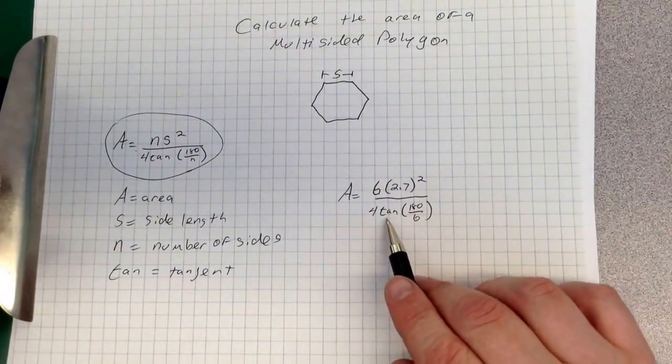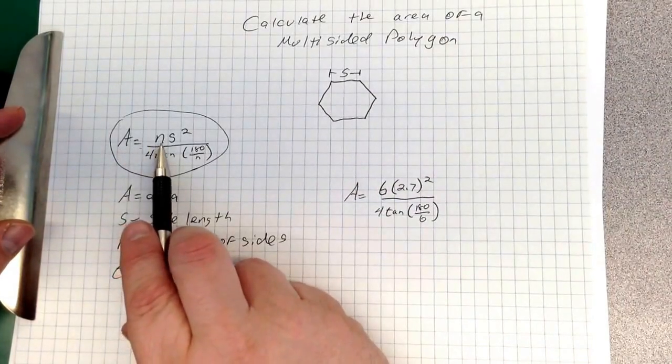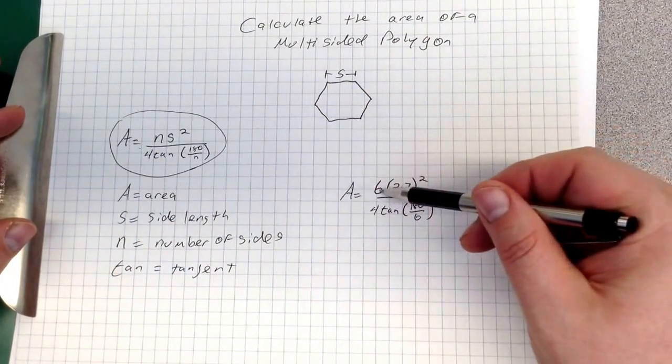So right here, I did some plugging and playing with the equation. If you check out this equation, n is number of sides, so I've got 1, 2, 3, 4, 5, 6. So I put that right there.